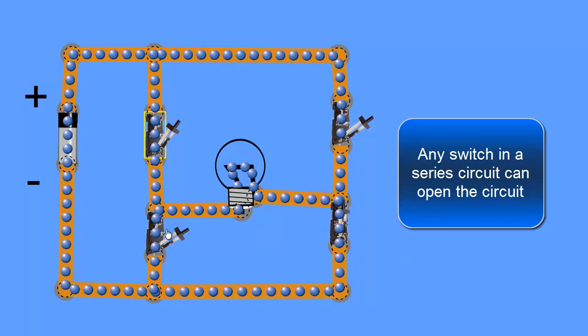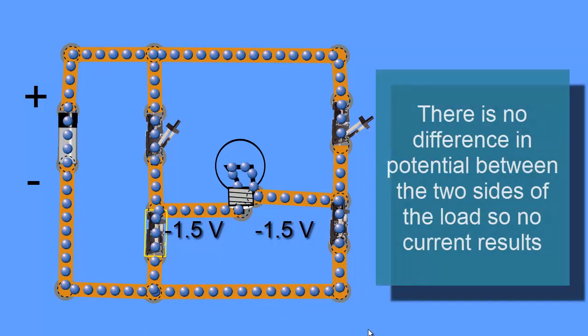But we can come down here and close this switch, and what do you think is going to happen? Well really nothing, because all we've done is hooked the negative terminal of the battery to one side of the load, and the negative terminal of the battery to the other side of the load. So we have no net voltage drop across the load.